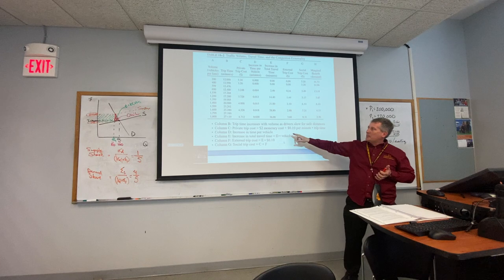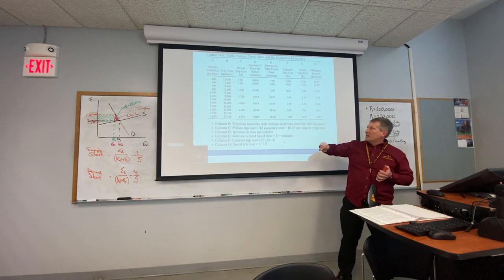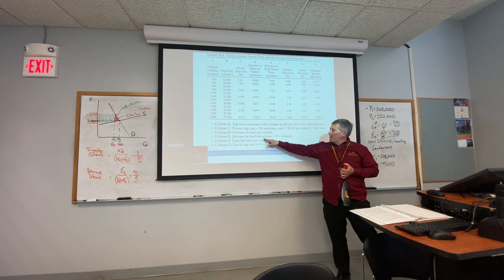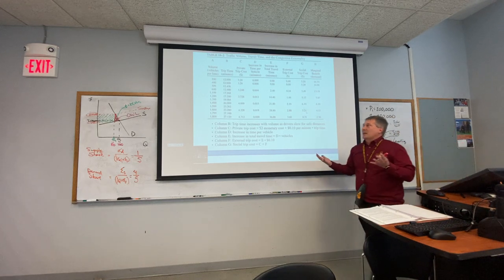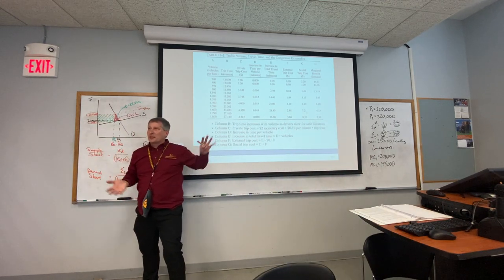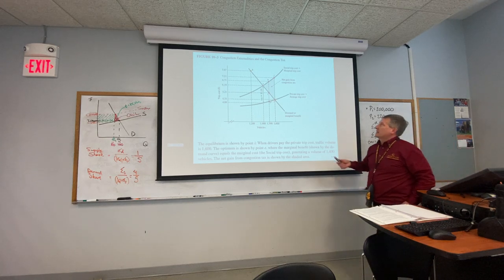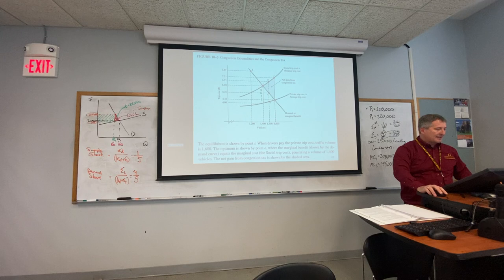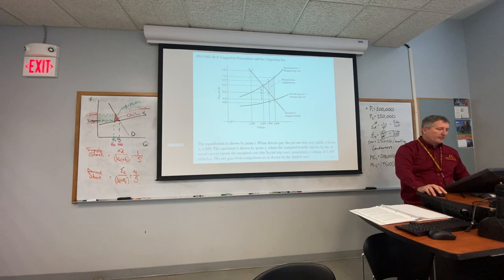All we're doing is constructing supply and demand by estimating what these external costs are. At the 1,600-vehicle level of traffic, the social trip cost is $7.21. So all we're doing is mapping out these social costs and private costs, and that's where the graph picture comes from — showing the divergence between private and social marginal cost curves.